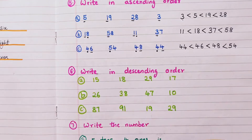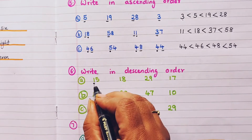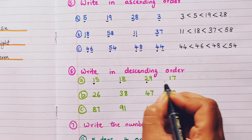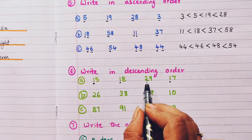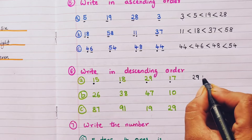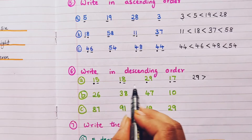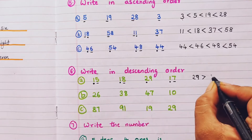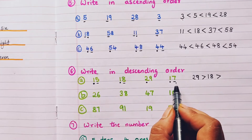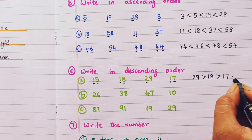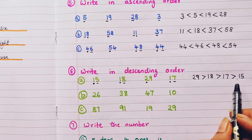Next question: write in descending order — descending order means from larger to smaller. First set: 15, 18, 29, and 17. Check tens place: 1, 1, 2, 1. Largest tens digit is 2, so 29 is first. Then compare ones of 15, 18, 17: 8 is largest so 18 next, then 7 so 17, then 15 last. Descending order: 29, 18, 17, 15.